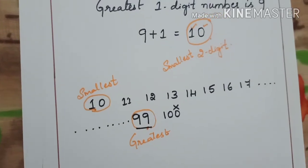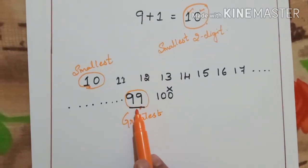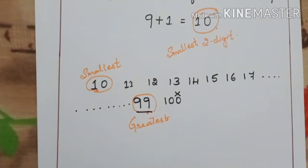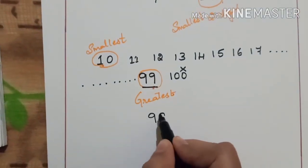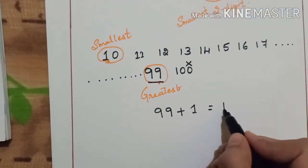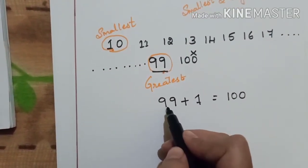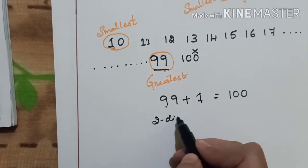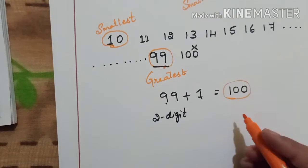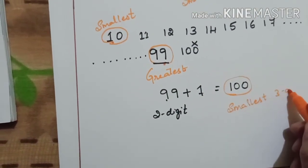Just like we added plus 1 to the greatest 1-digit number, let us add plus 1 to this greatest 2-digit number. 99 plus 1 — what is the answer? 100. So when you add plus 1 to the greatest 2-digit number, you get the smallest 3-digit number. So 100 is the smallest 3-digit number.